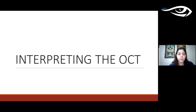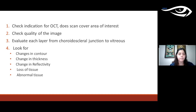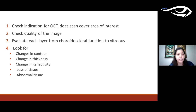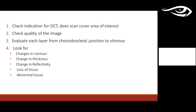When interpreting an OCT, first check the indication and ensure your scan covers the area of interest. Check image quality. Then evaluate each layer systematically from the chorioscleral junction up to the vitreous, looking for: changes in contour or shape of the retina, changes in thickness, changes in reflectivity, loss of tissue, and presence of abnormal tissue.